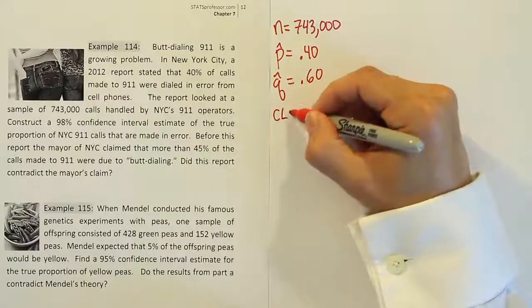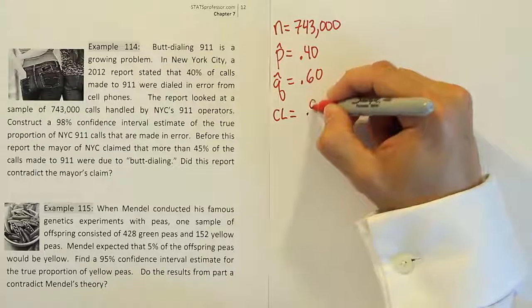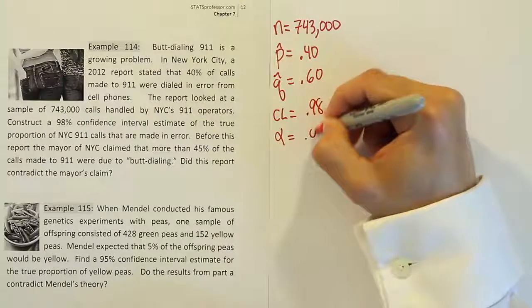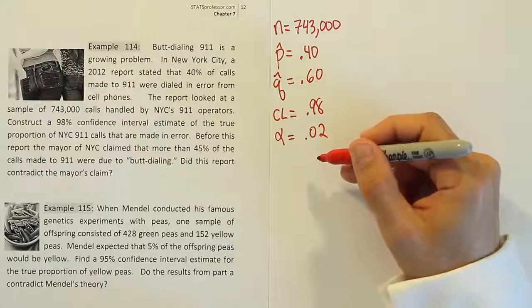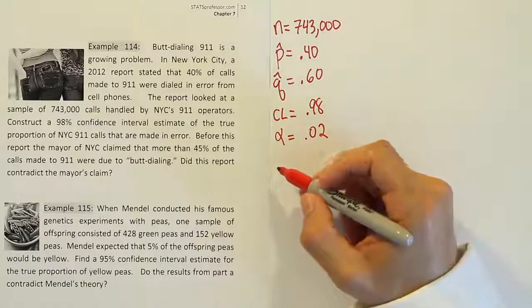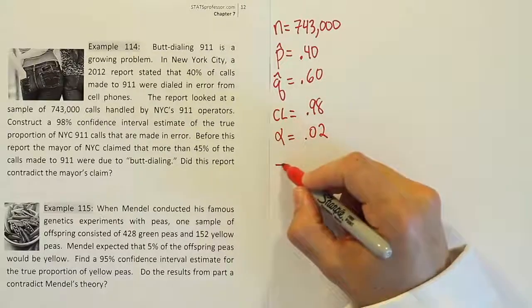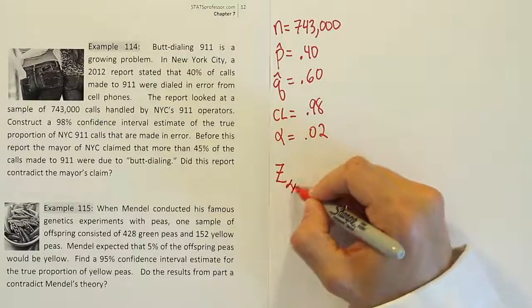And then you'll have the confidence level, which is 0.98. And lastly, you'll have the alpha level, which is 0.02. Okay, so you have your data. The next step is to come up with our critical value. Now remember, the critical value for these problems is always, if it's a proportion problem, z alpha divided by 2.